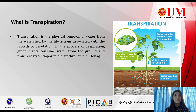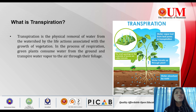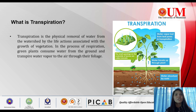Next is transpiration. It is the physical removal of water from the watershed by the life actions associated with the growth of vegetation. In the process of respiration, green plants consume water from the ground and transpire water vapor to the air through their foliage or leaves. So transpiration is when water in the ground is absorbed by the roots and travels up through the plant, then evaporates from the leaves.